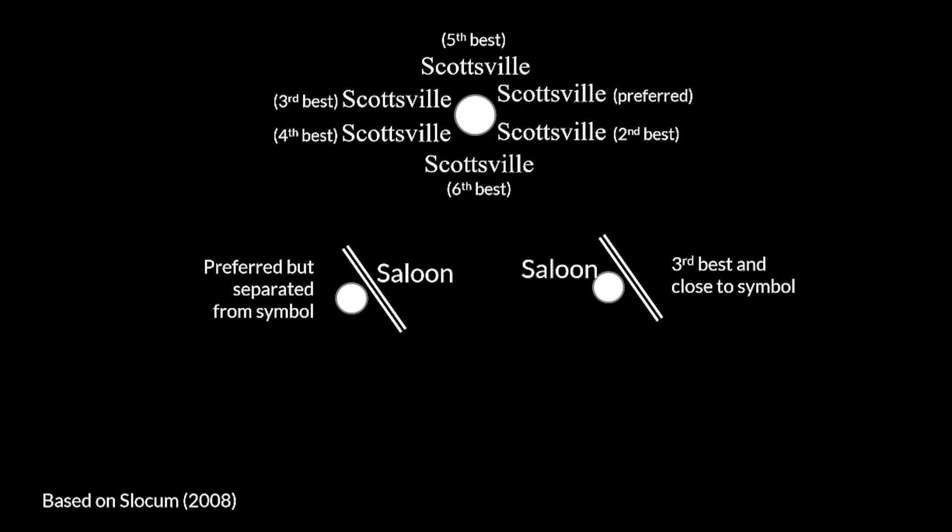Additionally, in cases where it is difficult to keep the label near its symbol, leader lines can be used to direct the label to its symbol. The label placement guidelines are applicable in these situations as well. For example, the upper right is the preferred position with a leader line, or whatever the best position available is.